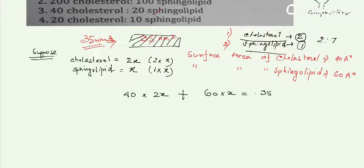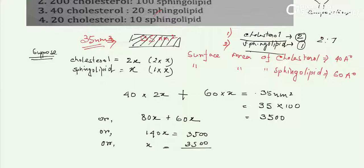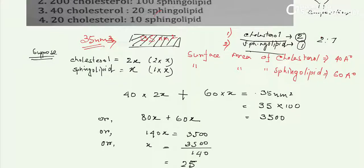We convert 35 nanometers squared: 35 nm² equals 3500 angstroms squared (since 1 nm = 10 Å, so 1 nm² = 100 Å²). So the equation becomes: 80x + 60x = 3500. Therefore 140x = 3500, and solving for x gives x = 25.